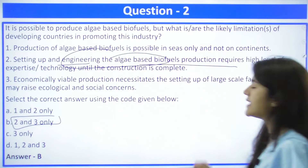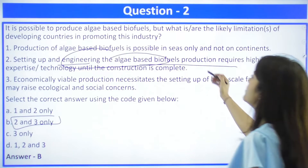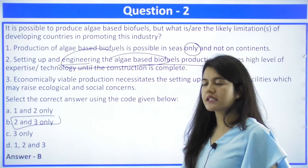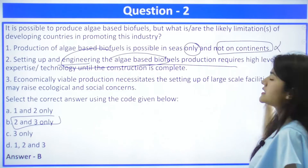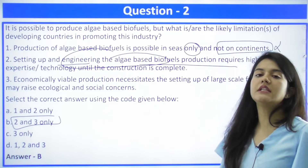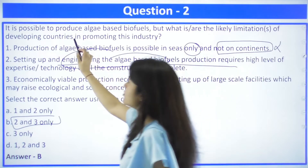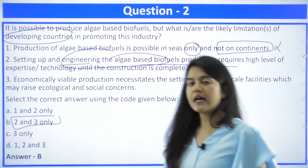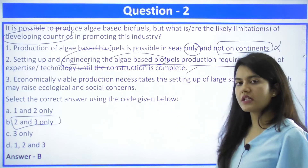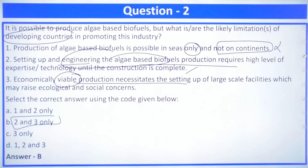For algae-based biofuels, the first statement is incorrect because algae can also be produced on continents, not only in the sea. The second statement is correct — algae-based engineering is a very costly affair requiring a high level of technological skills, which is a drawback for developing countries. The third statement is also correct — large-scale facilities are required for economic viability, which are difficult for developing countries. So the answer is 2 and 3.